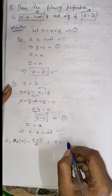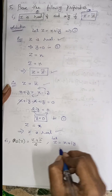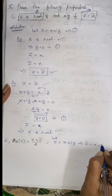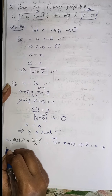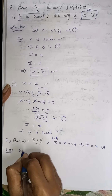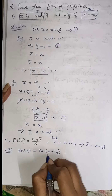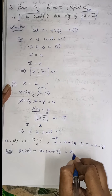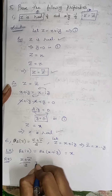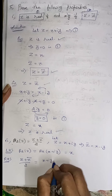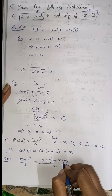Let Z equal to X plus iY as usual, and Z bar is X minus iY. The LHS is the real part of Z, which equals X. For the RHS, Z plus Z bar divided by 2: Z value is X plus iY, plus Z bar which is X minus iY, divided by 2.